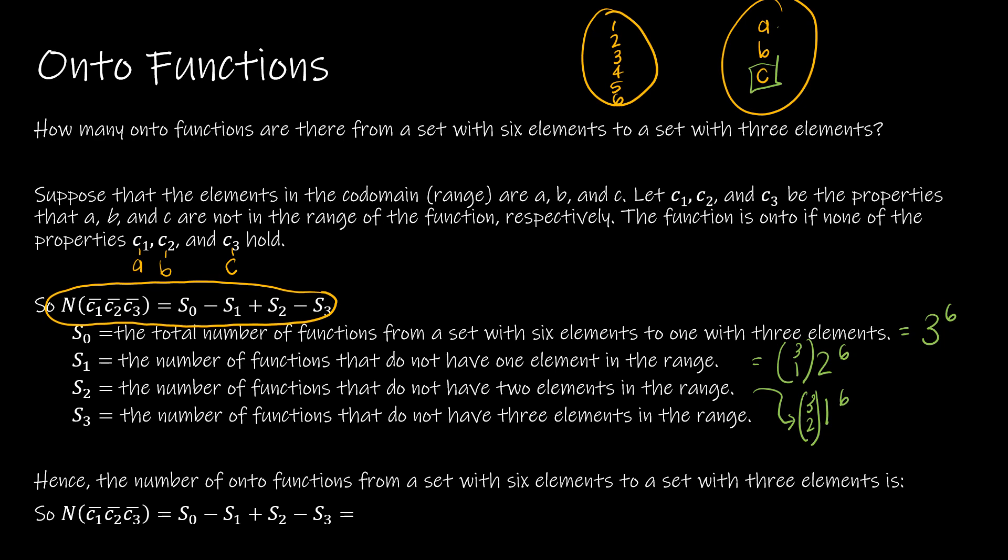And then for the last one, we're saying the number of functions that don't have any elements, any of the three elements in the range. Well, this is zero, and it's zero because if nothing is being mapped to, then it's not a function, because there's zero elements left. So basically, it's like (3 choose 3) × 0⁶, which is still just zero.